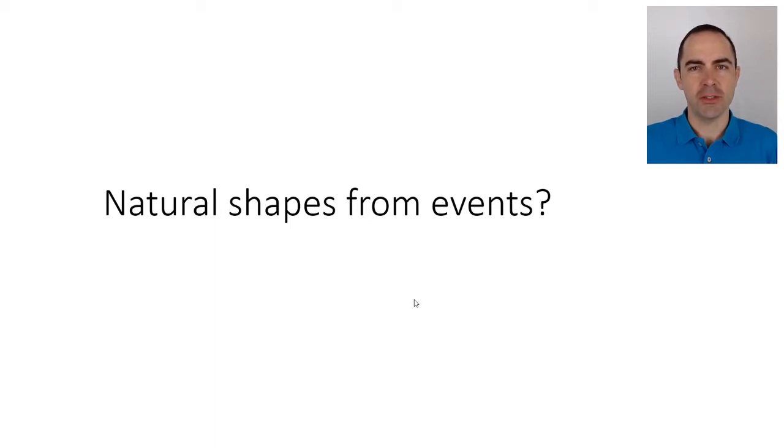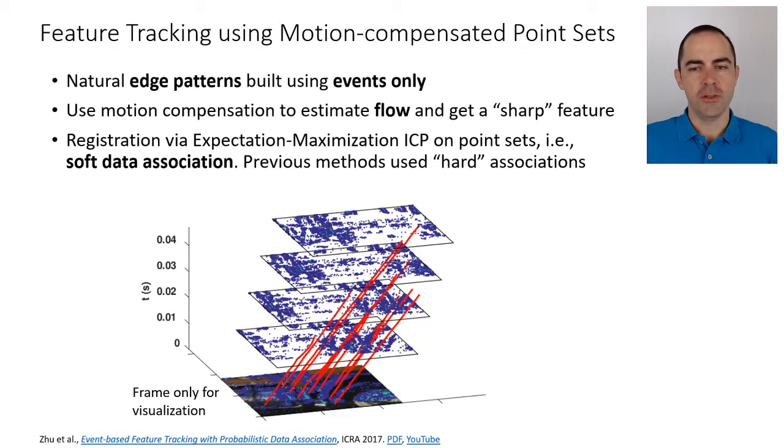Okay, so we have seen a couple of trackers. Now the question is: can we track more natural shapes, detecting them from the events? Let's take a look at one example. This is a paper from ICRA robotics conference 2017 by the group at UPenn, University of Pennsylvania.